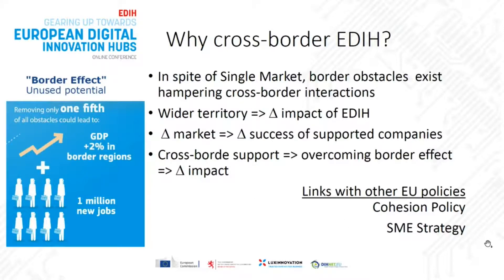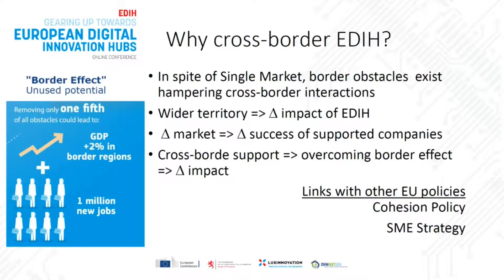In cross-border cooperation, we know that in spite of the single market we still experience border obstacles in all types of interactions, including business interactions. This leads to a lost market — we see cases where an SME has a natural market of 300 degrees around itself, but because there is a border it can only explore 180 degrees of that territory due to tiny legal border obstacles that create difficulties accessing the market on the other side. The SME strategy from DG GROW is now putting a big emphasis on solving this type of border obstacle.